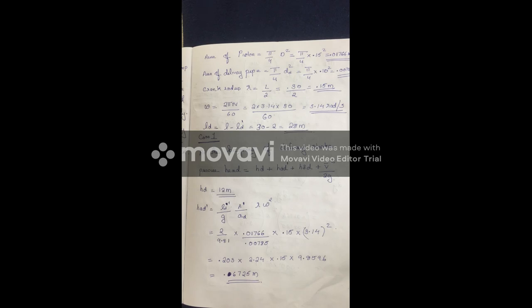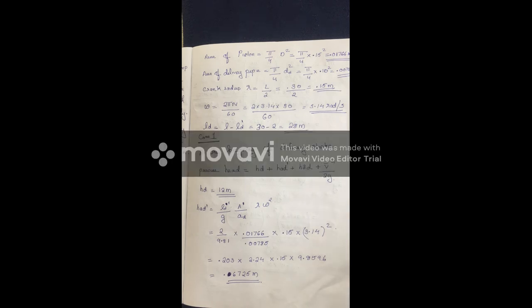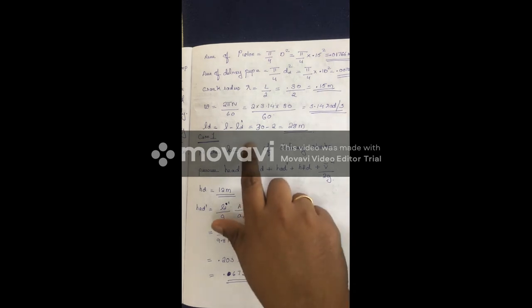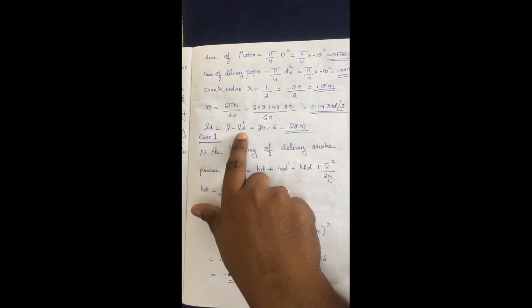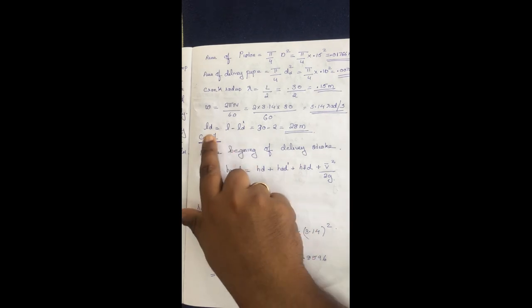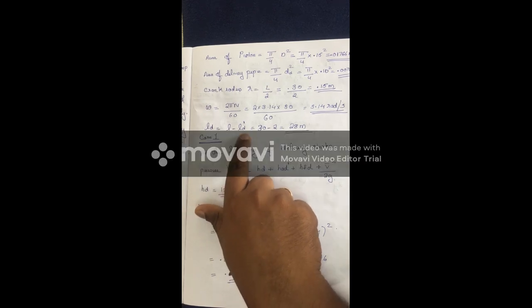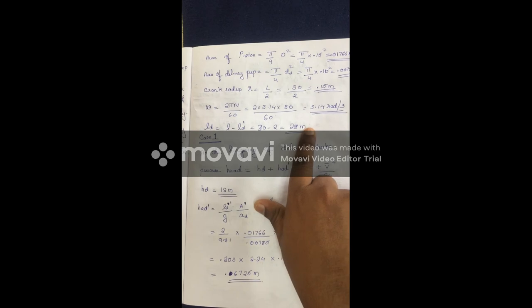Length of delivery side total length from cylinder centre to air vessel is L_d'. The total delivery pipe length and the segment labels are used in the pressure head calculations for the delivery stroke.